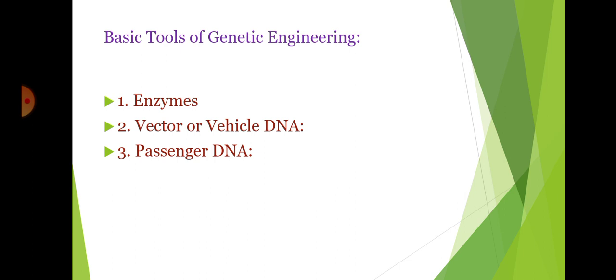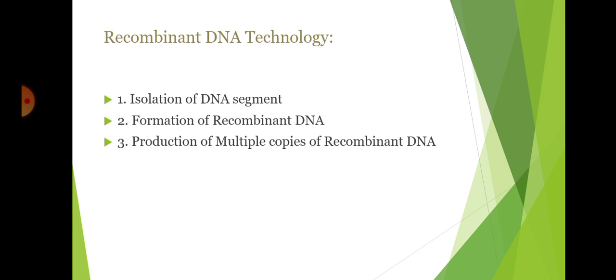Recombinant DNA technology involves the following stages. First is isolation of DNA segment: the DNA to be used as vehicle or passenger is taken out from the cell by lysing it with a suitable enzyme, and the DNA is isolated from other cell contents. Then both vehicle and passenger DNA are cleaved using the same restriction endonuclease so that they have complementary sticky ends.